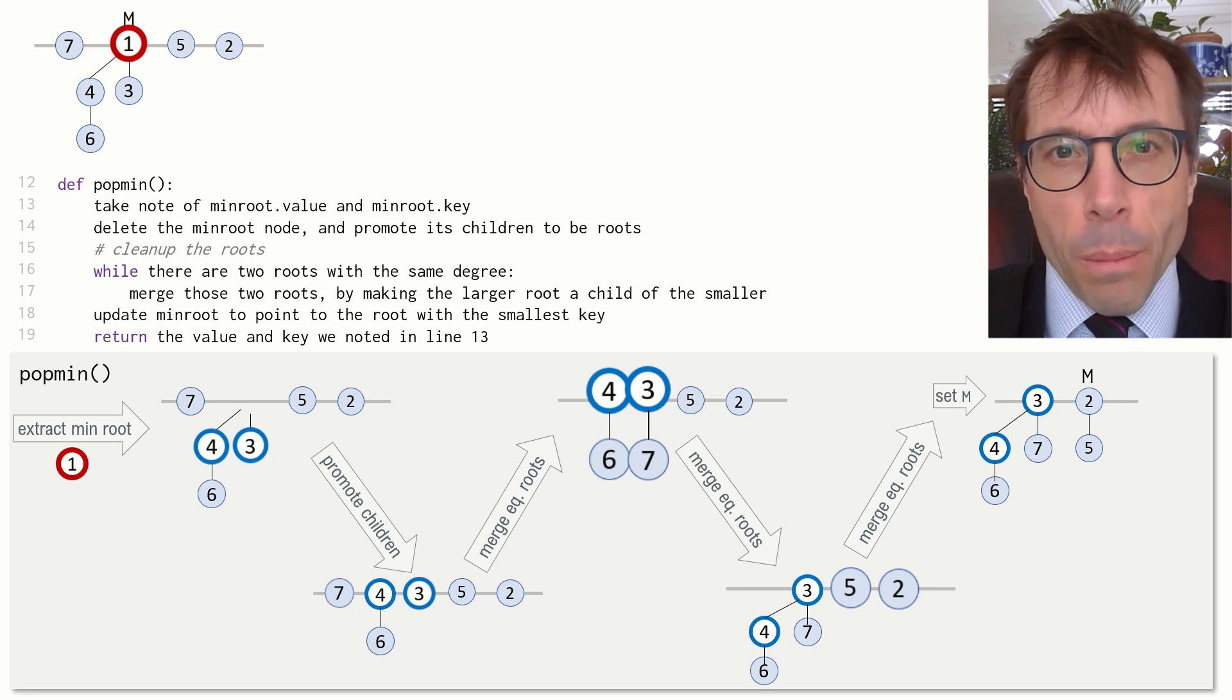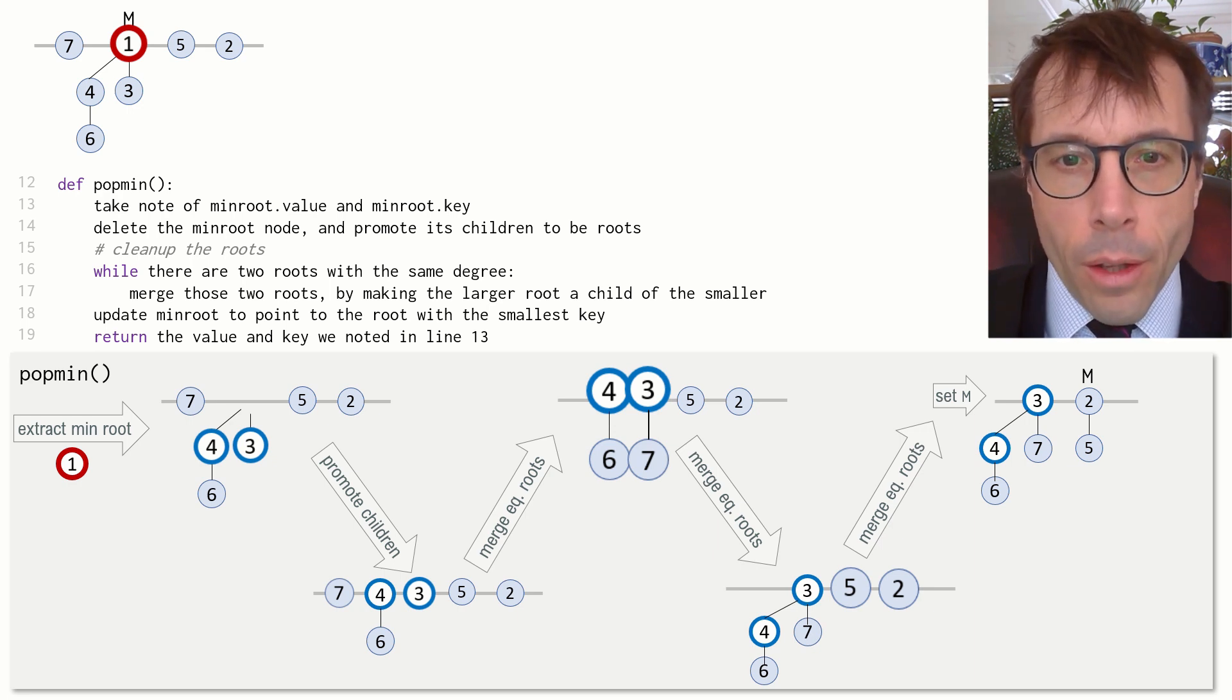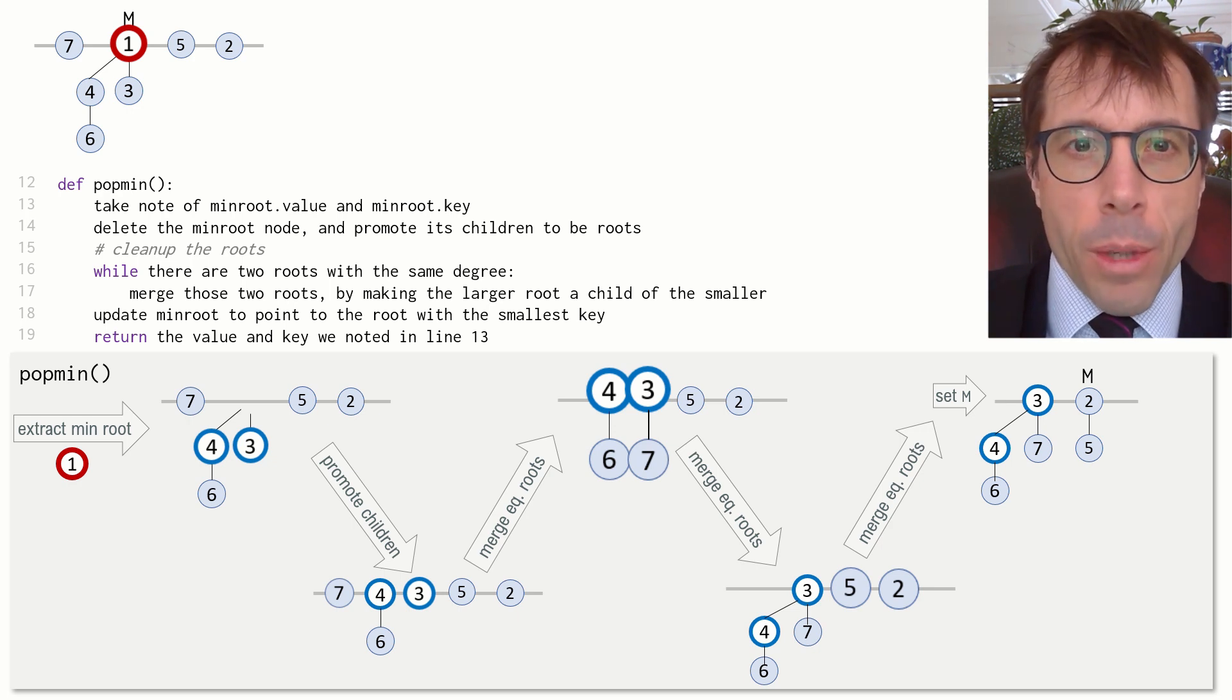Basically just the same as popmin in the binomial heap. The only difference is that this time, in the cleanup phase, we're not just cleaning up the orphaned nodes, we're also cleaning up all the nodes that we pushed into the queue. That's the whole thing about getting efficiency savings by doing lots of cleanup in a batch.